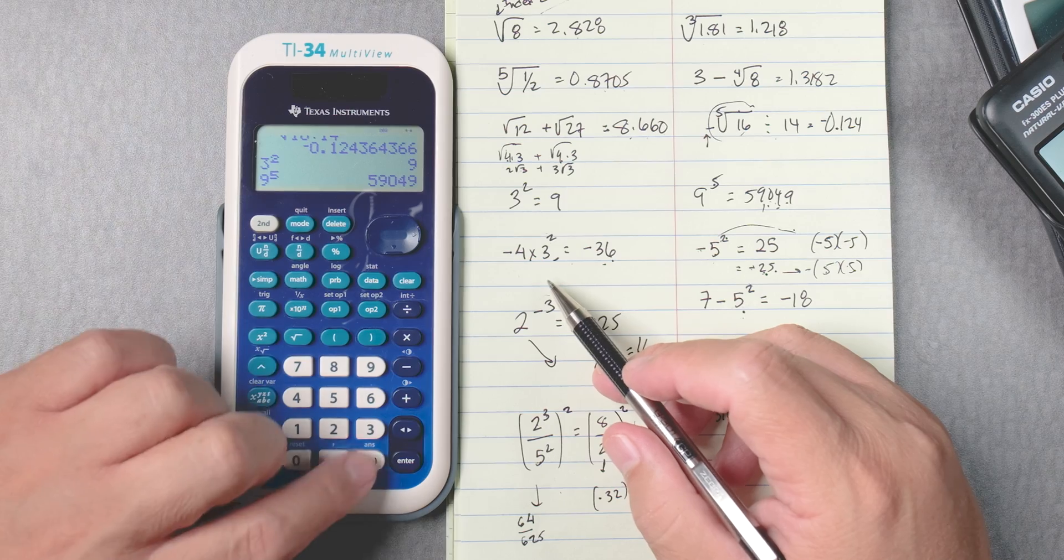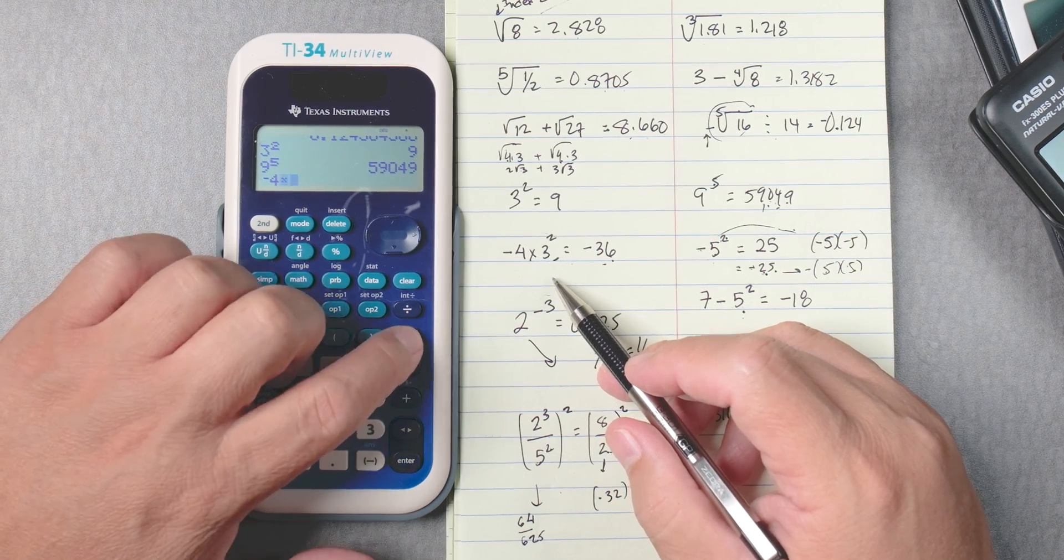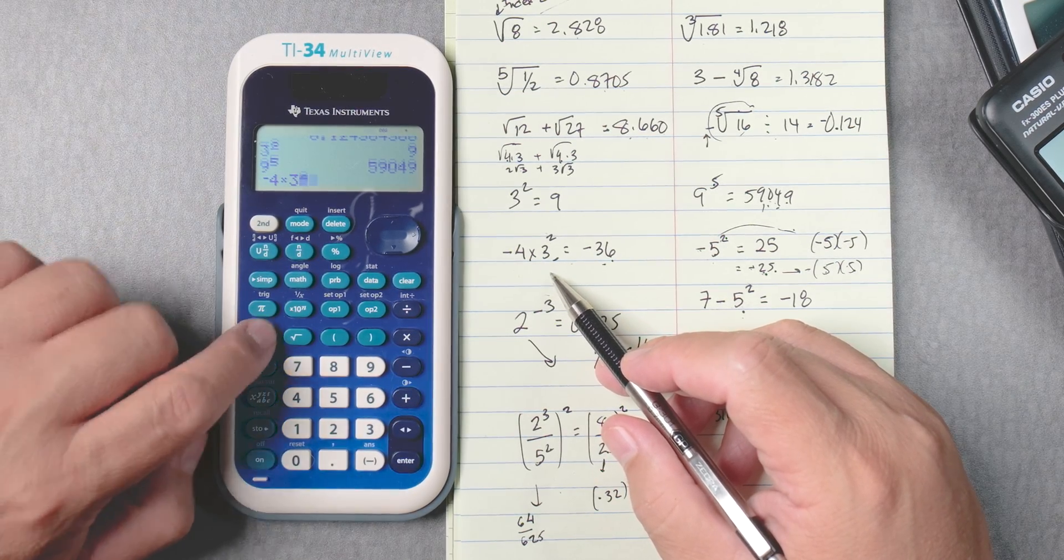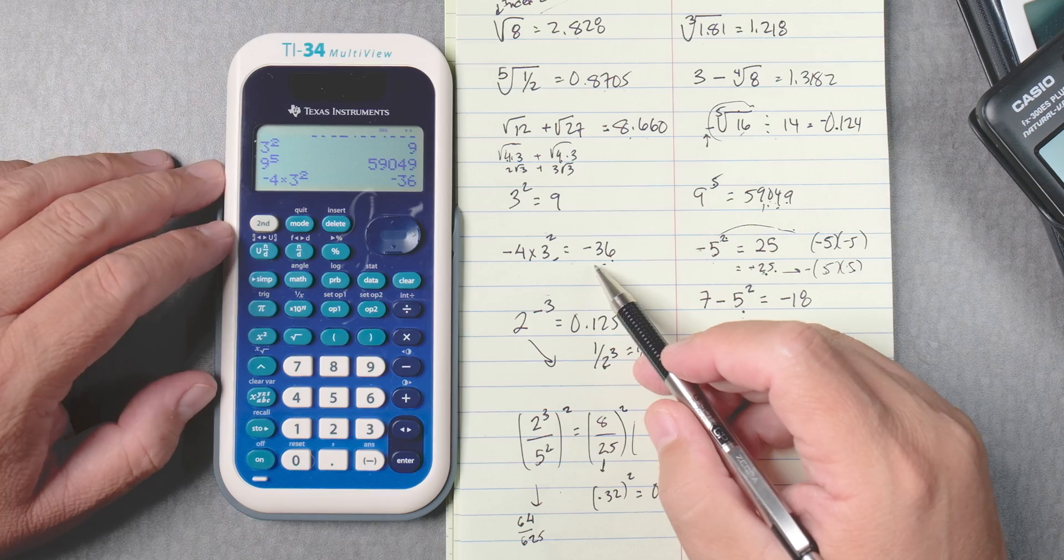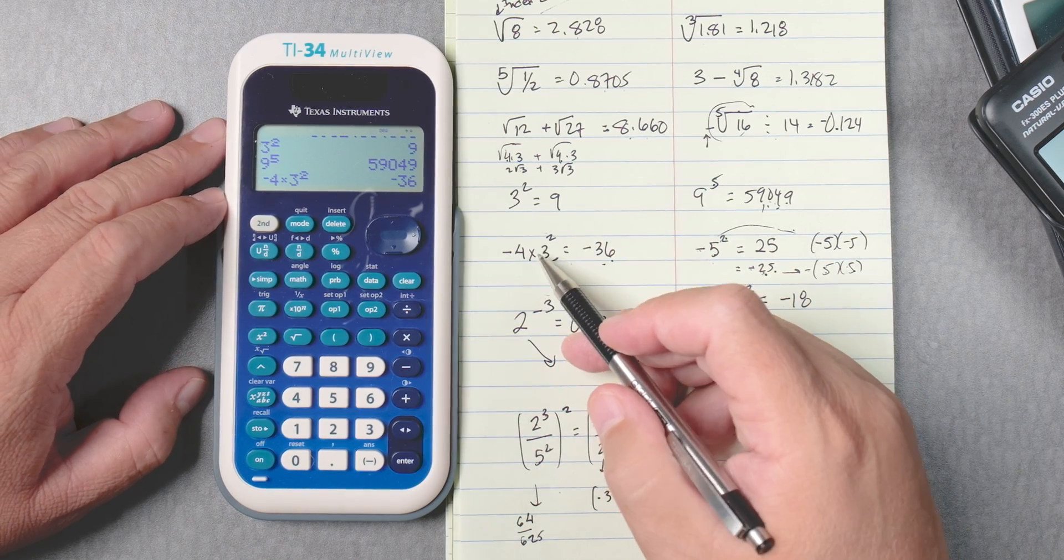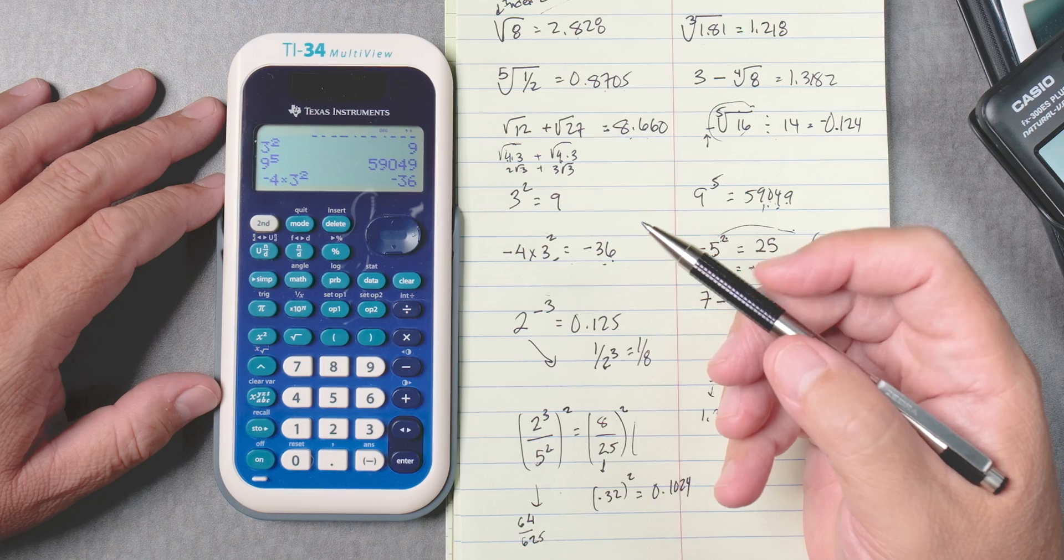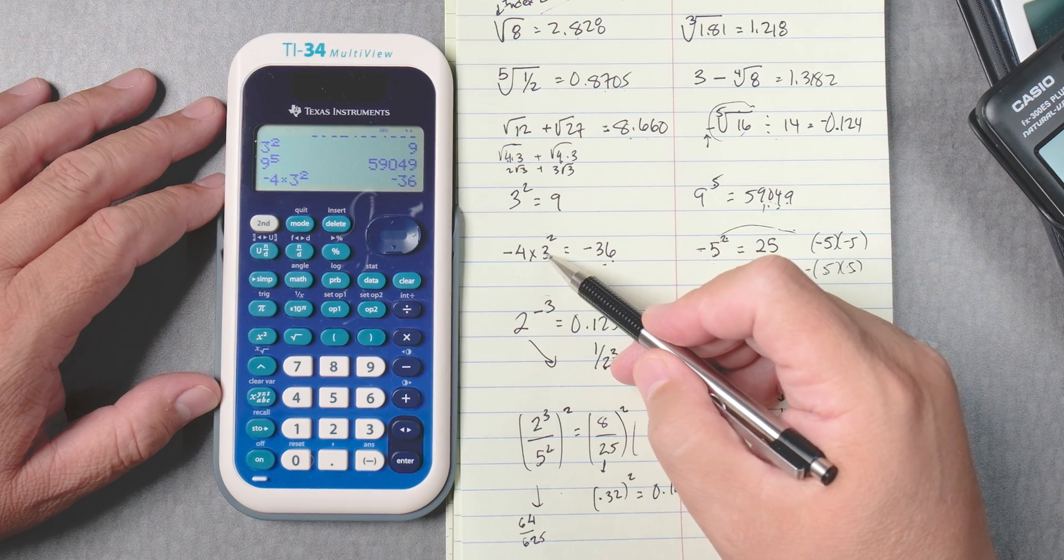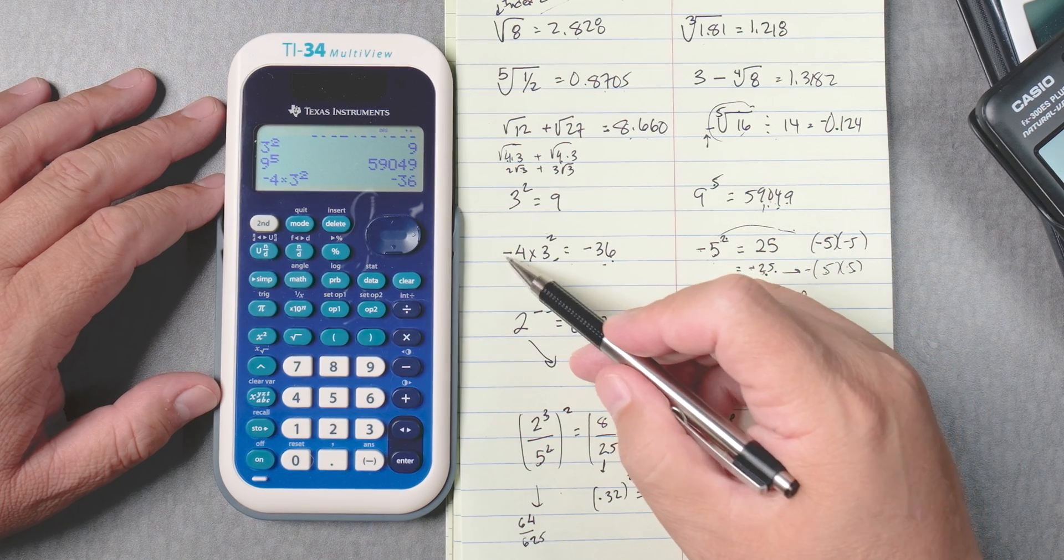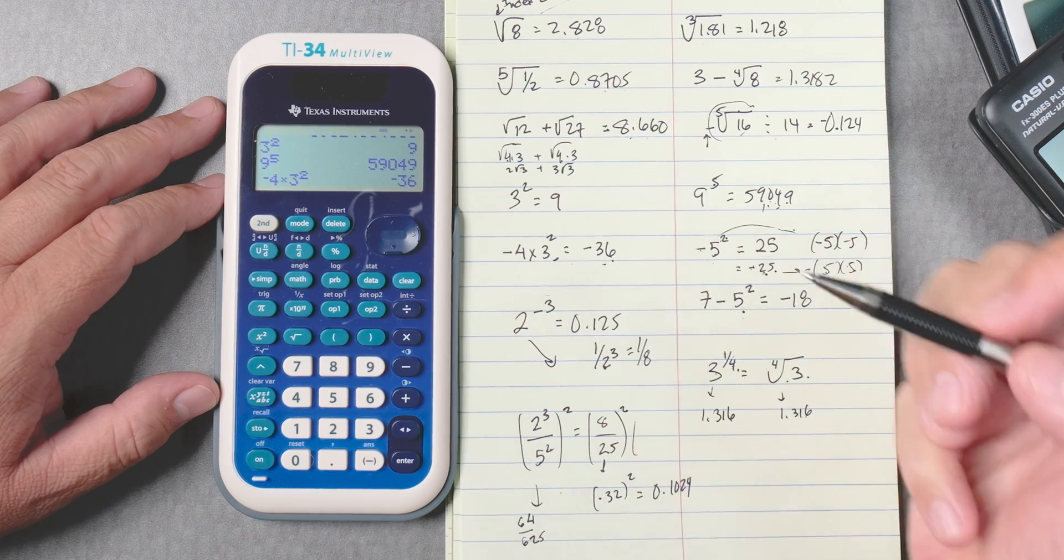Okay, let's do this one, negative 4 times 3 squared, enter, negative 36. So it's doing the proper order of operation, right? 3 squared is 9, negative 4 times 9 is negative 36.